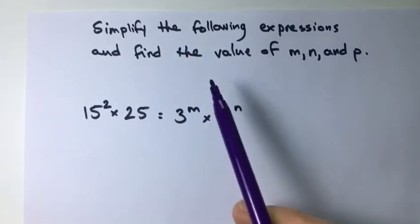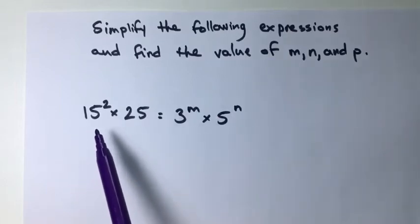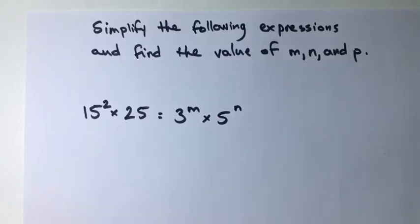Alright, here we want to simplify the expressions and find the values of m, n, and p. So in our first example, we have 15 squared times 25 equals 3 to the power of m times 5 to the power of n.